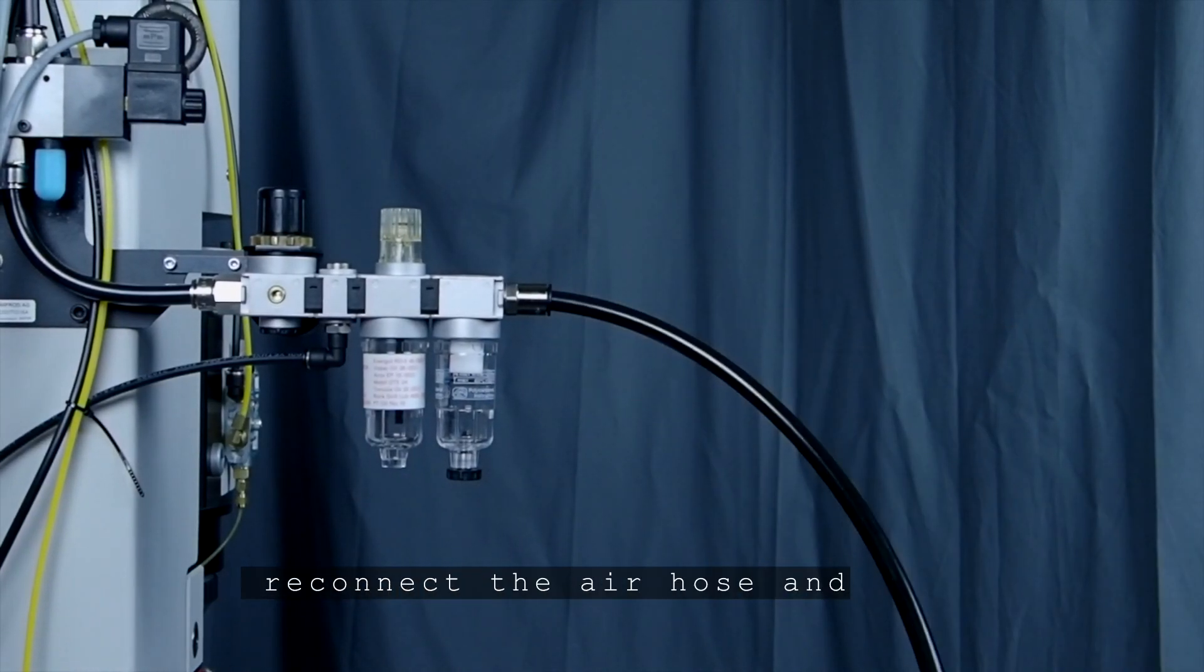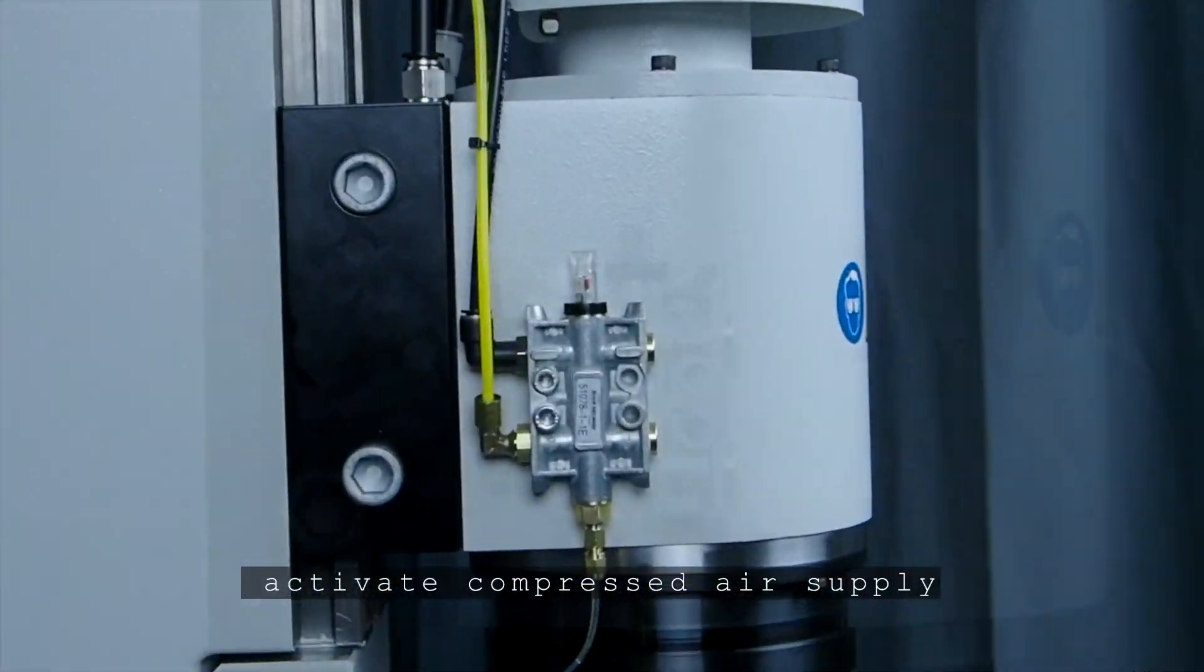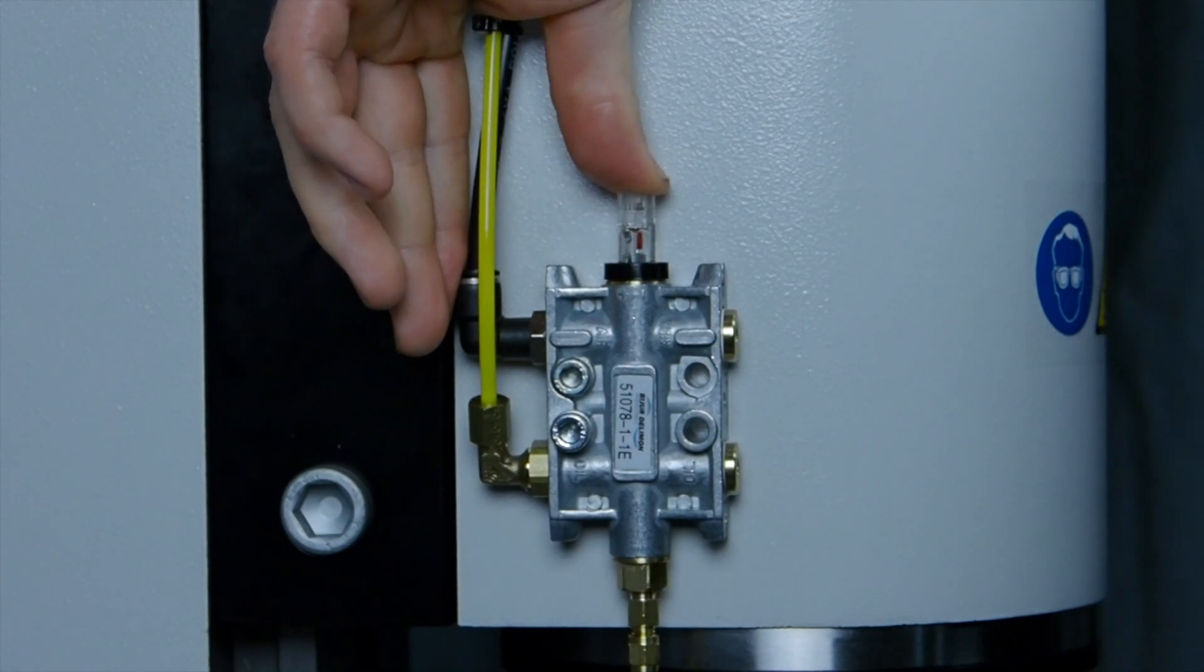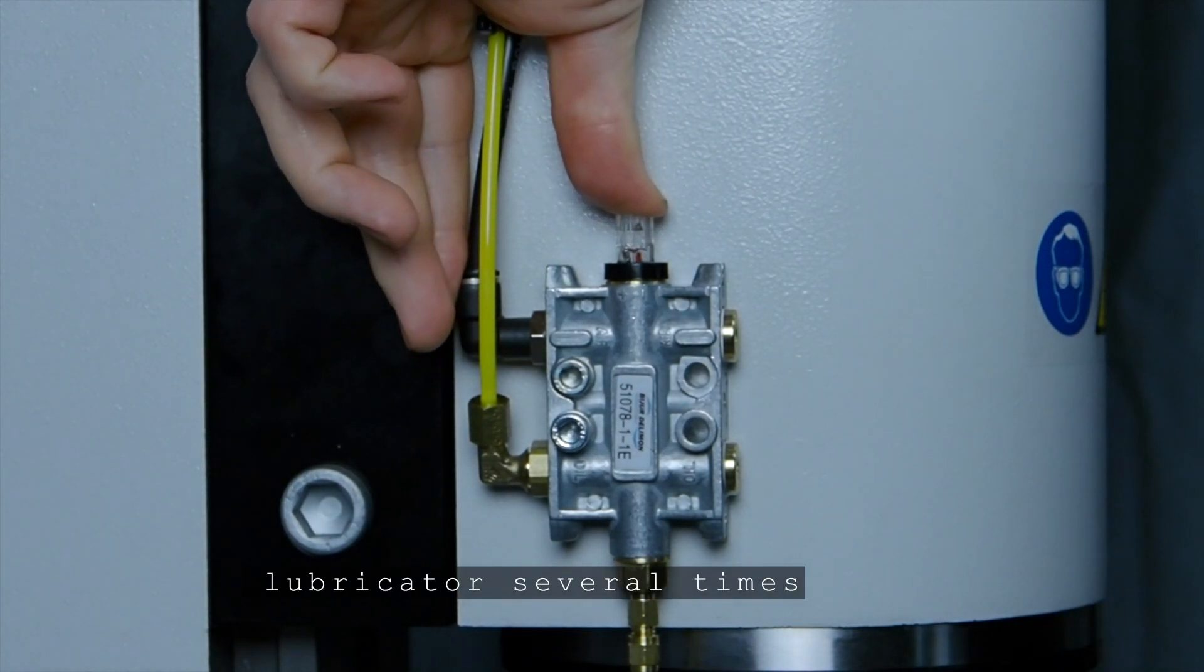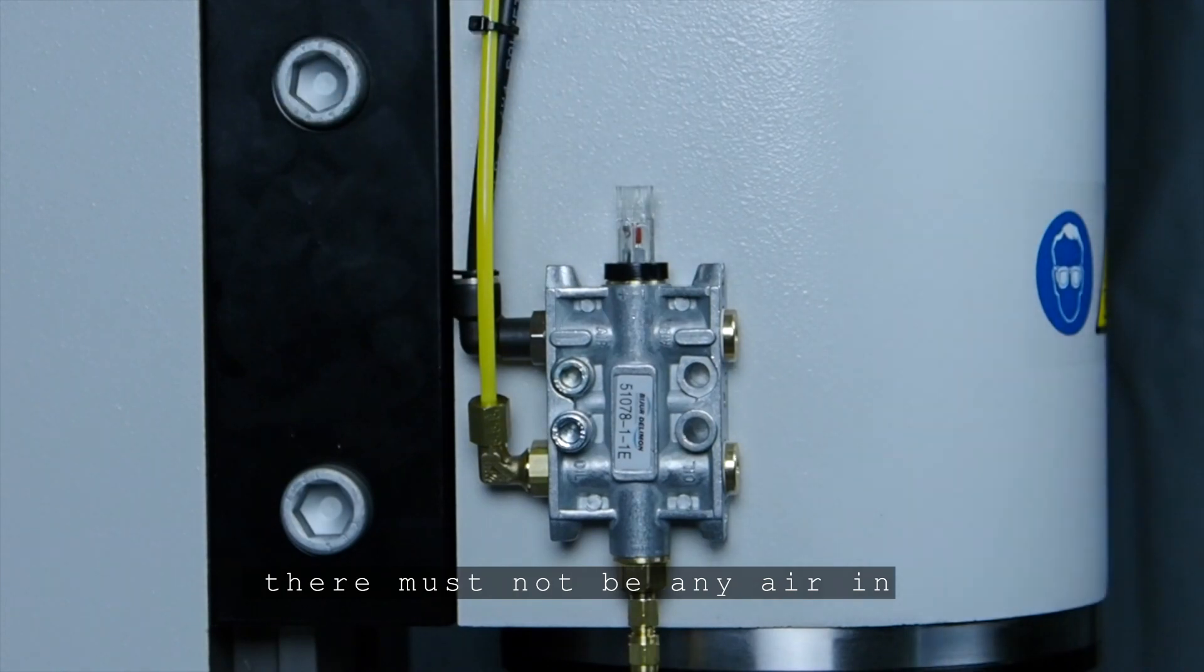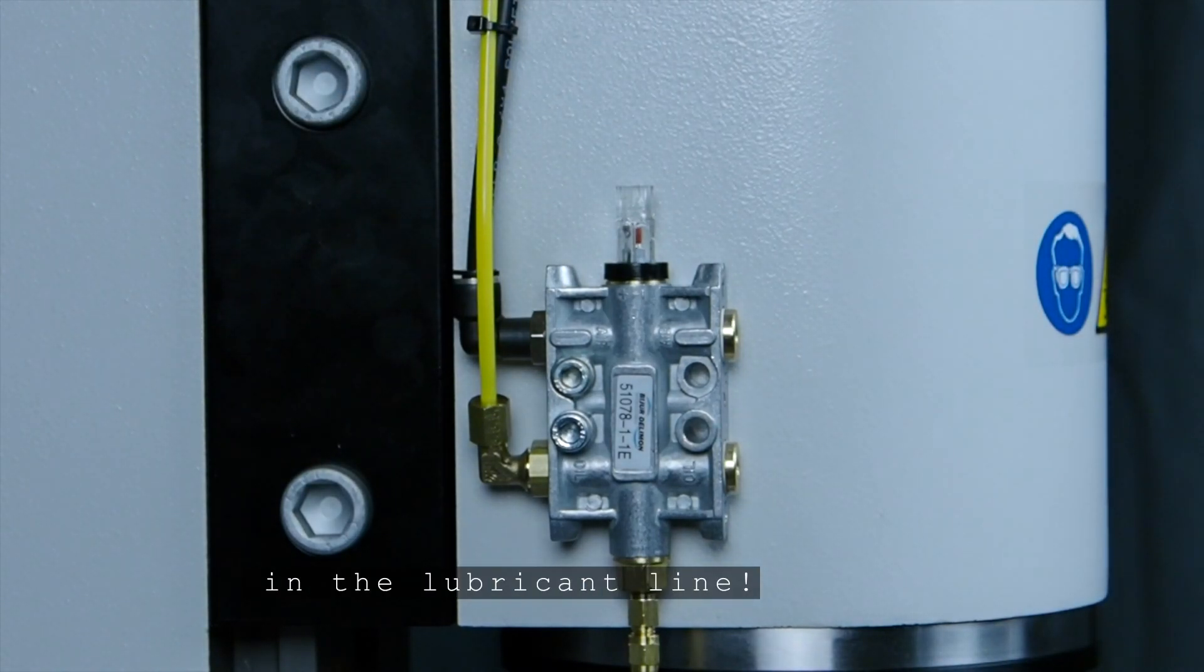Reconnect the air hose to the machine and activate the compressed air supply. Manually activate the injection lubricator several times. There must not be any air in the lubrication line.